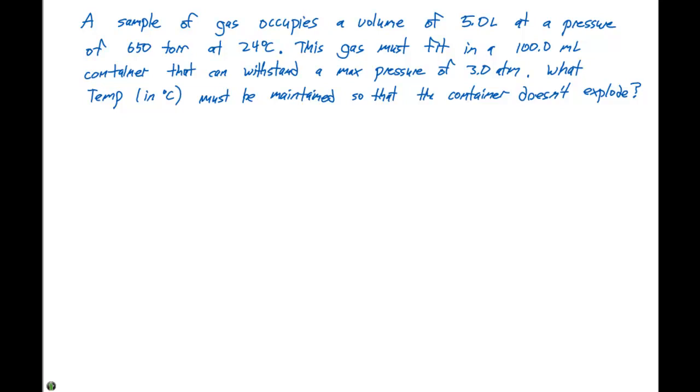So this problem has a lot of different variables going on, and this is a direct application of the combined gas law. The combined gas law says P1 V1 over T1 is going to equal P2 V2 over T2. We're looking for a second temperature, so we want to rearrange this equation to solve for T2, which is going to be P2 V2 times T1 divided by P1 times V1.